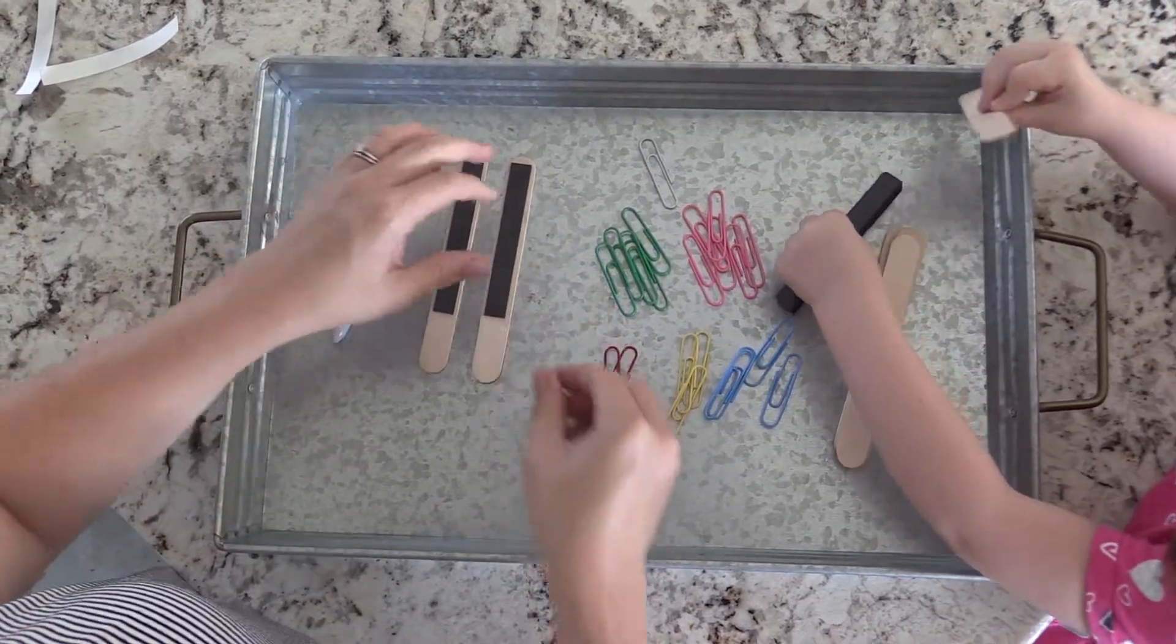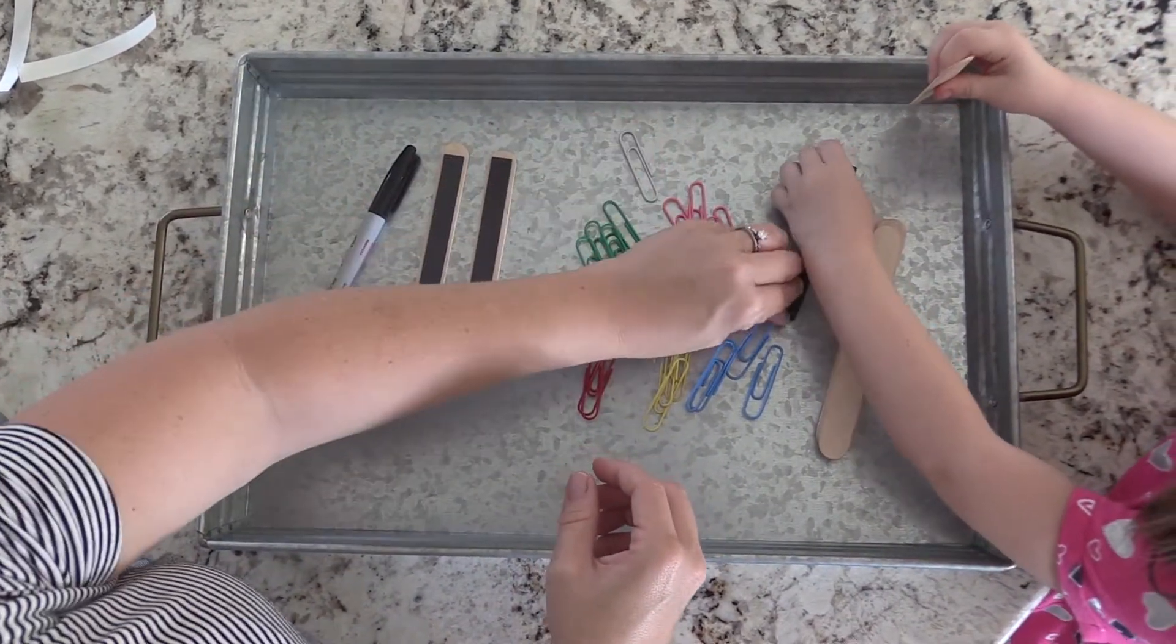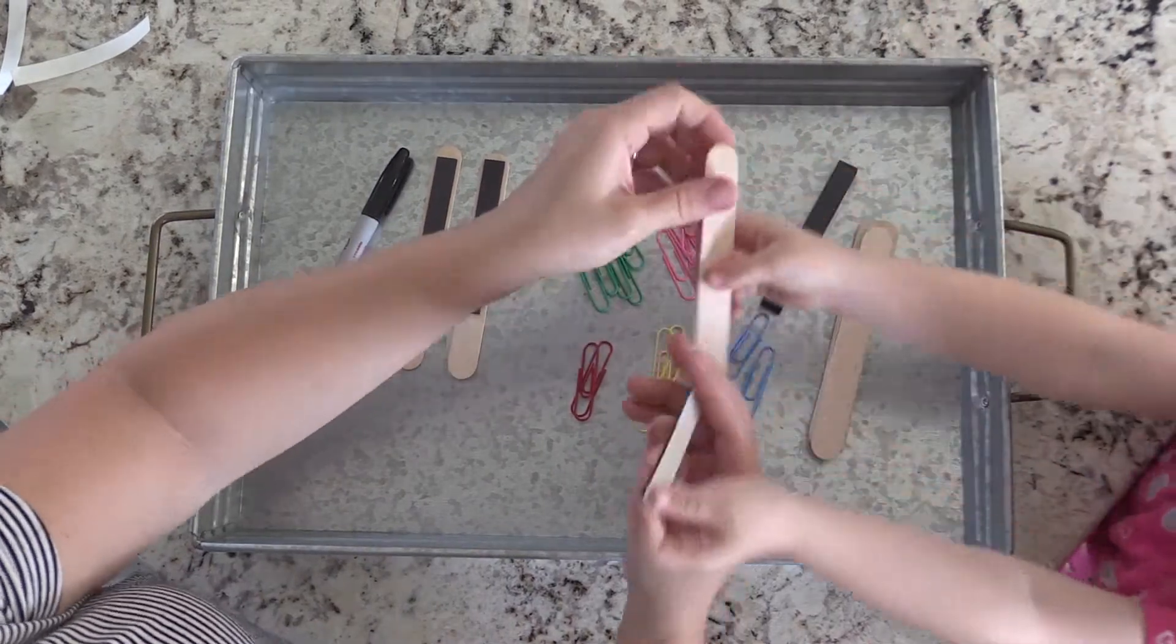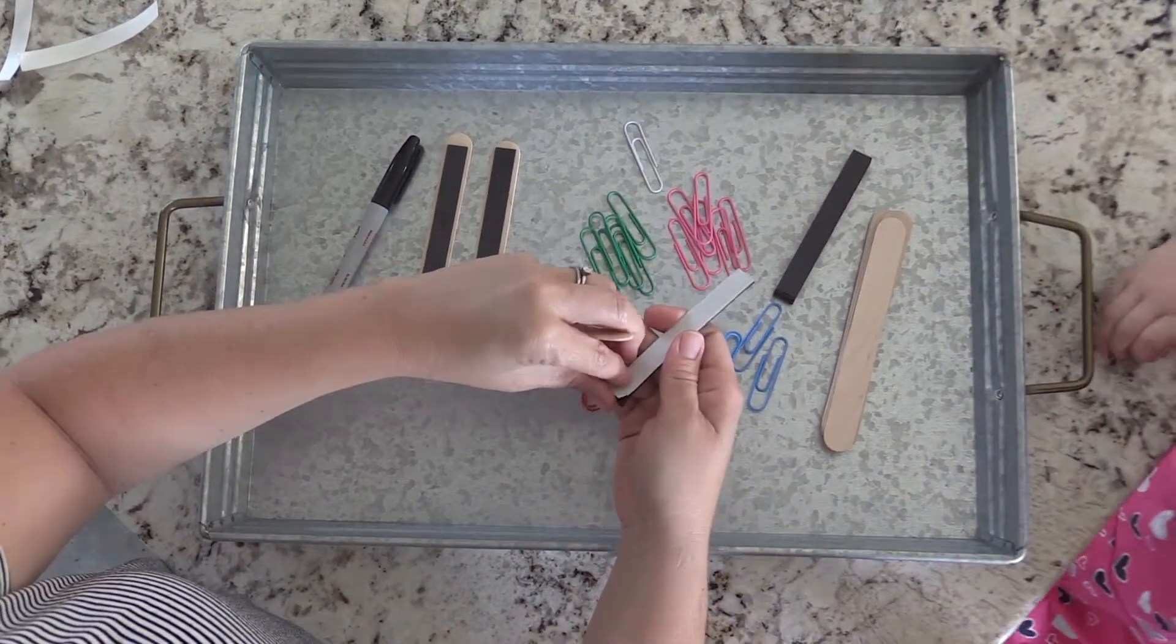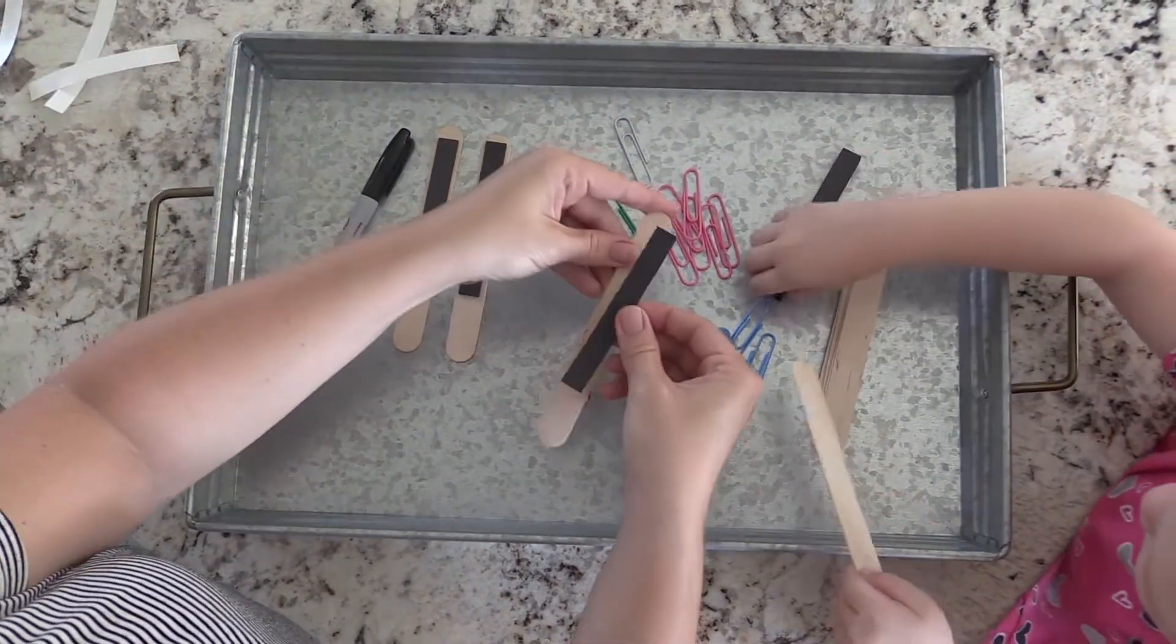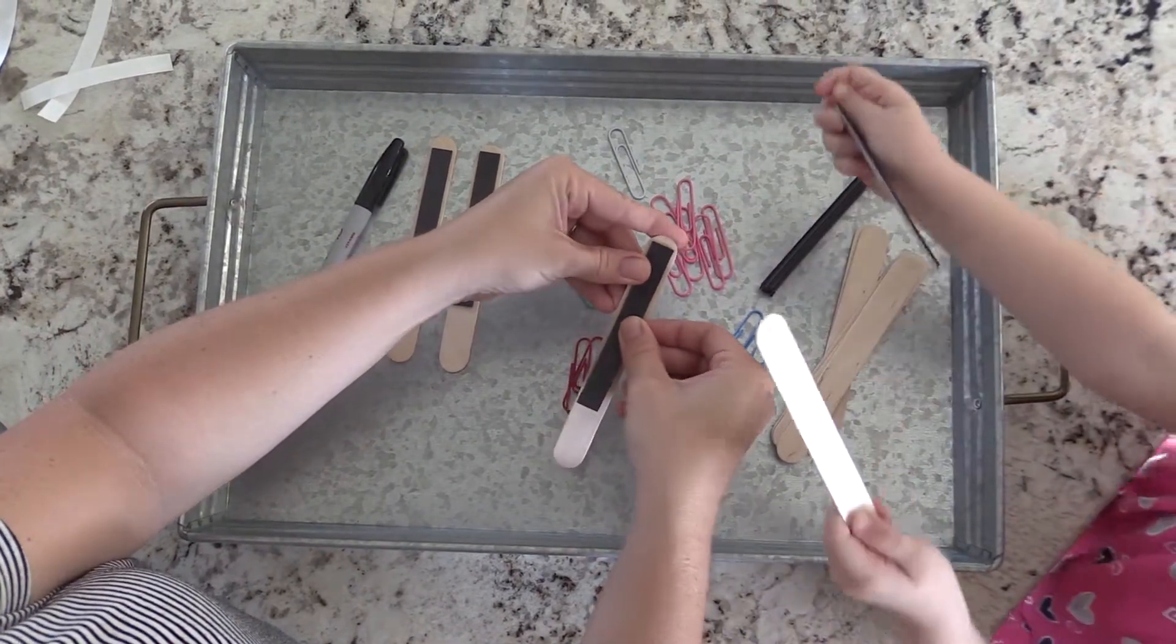Do you find it challenging incorporating math into your STEAM activities for preschoolers? In this activity we will look at using common office supplies as we cover S for science, A for art, and M for math.